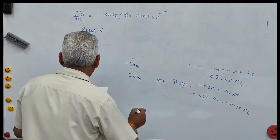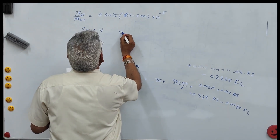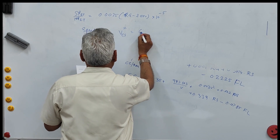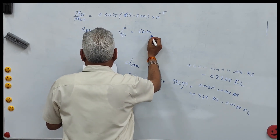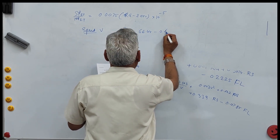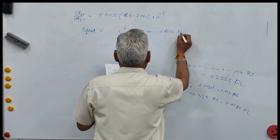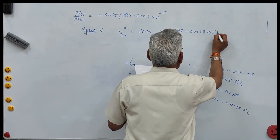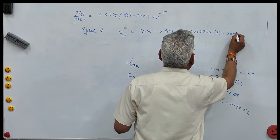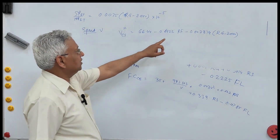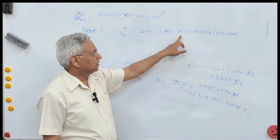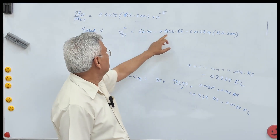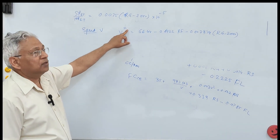For a single lane road, the speed of a small car is given by: 66.44 − 0.6922·RF − 0.002874·(Rg − 2000). Here Rf is rise or fall in meters per kilometer, and Rg is roughness in millimeters per kilometer. This equation is for a small car on a single lane road.